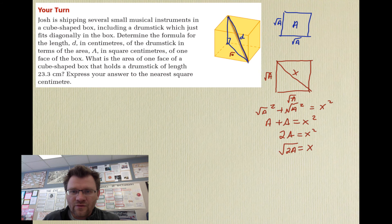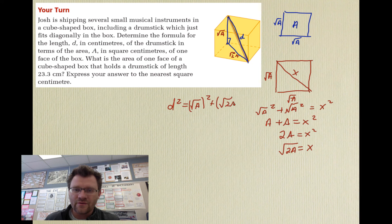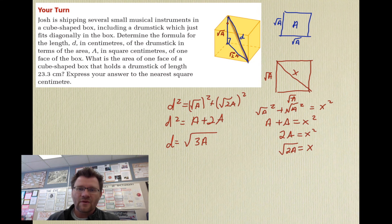Now we know the face diagonal is root (2A), and one vertical side of the cube is root A. Using the Pythagorean theorem again for the space diagonal d: d squared equals root A squared plus root (2A) squared, which gives d squared equals A + 2A. So the equation for d is the square root of 3A. That's the distance from one corner all the way to the opposite corner: d equals root (3A).